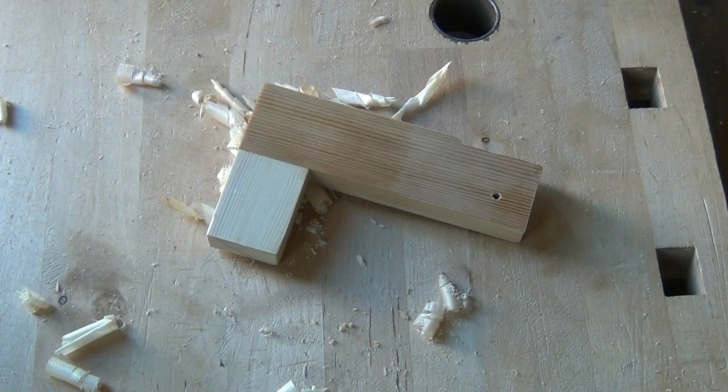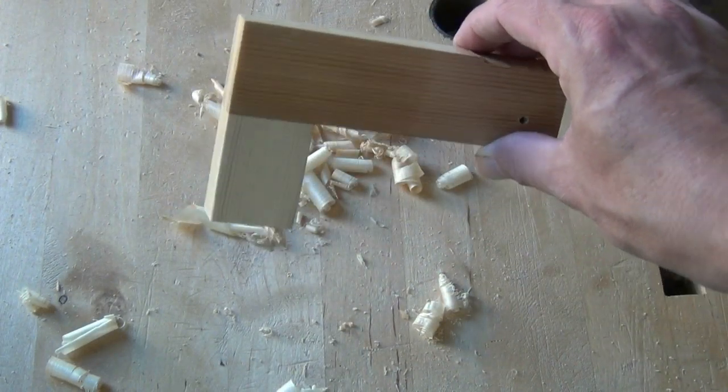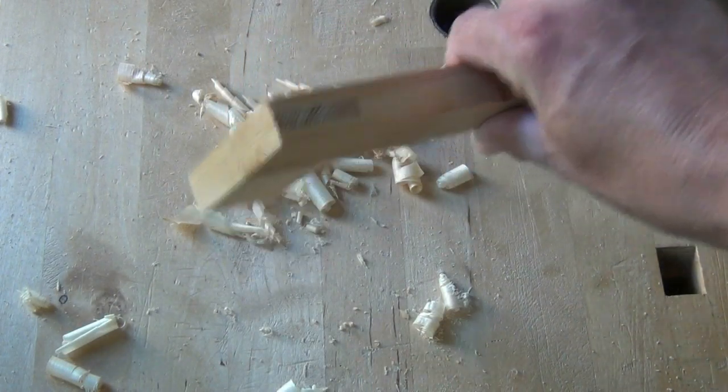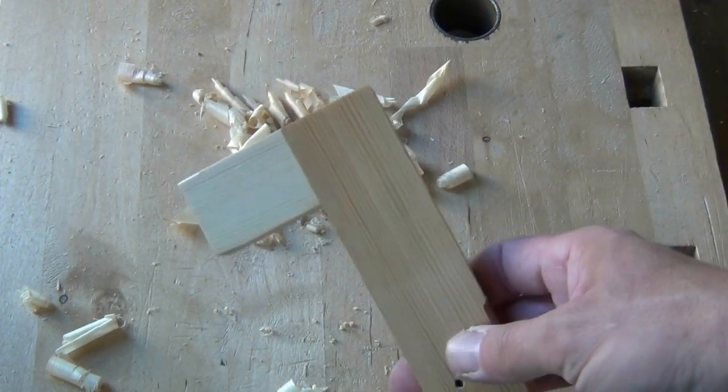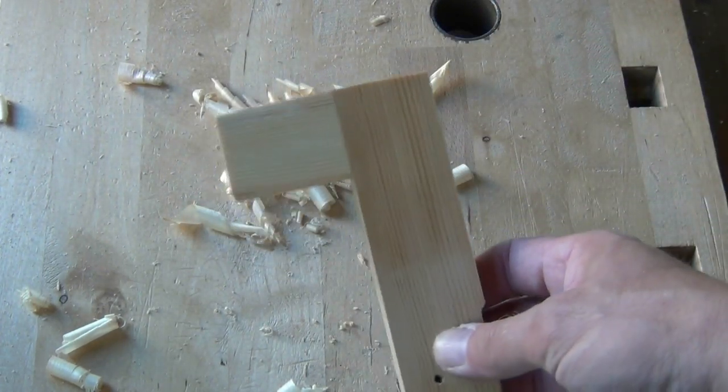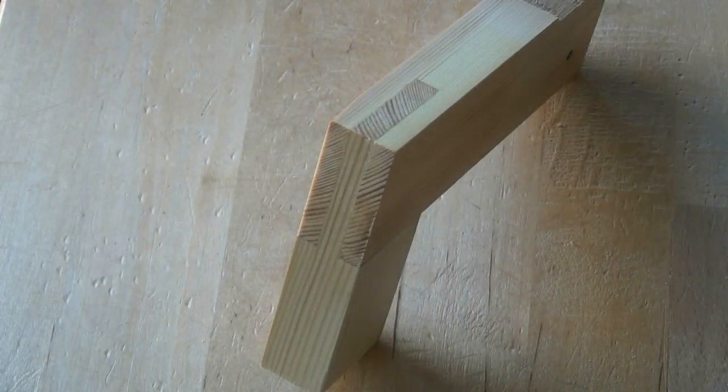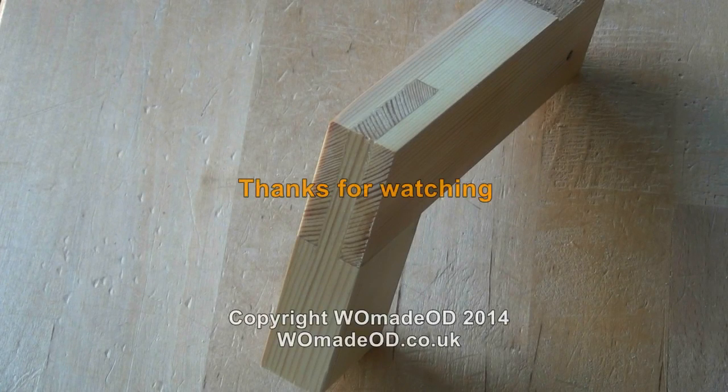And there we have the finished joint. Nice tight joint lines. Perfect for the corner of face frames. The bridle joint or open mortise and tenon. Give it a go.